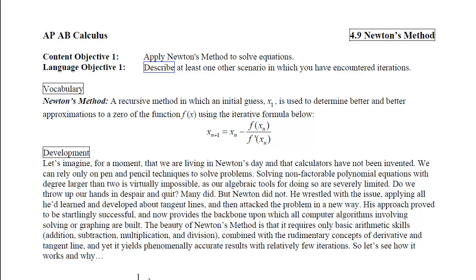Our vocabulary for today is Newton's Method, and this is a recursive method in which an initial guess, x sub 1, is used to determine better and better approximations to the zero of a function, f(x), by using the iterative formula below: x sub n plus 1 equals x sub n minus f of x sub n divided by f prime of x sub n.